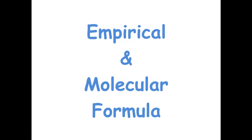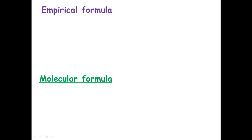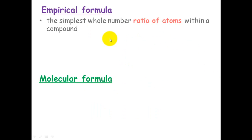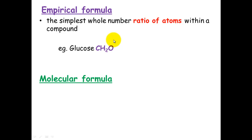Empirical and molecular formula — what they are and how to derive them. The empirical formula is the simplest whole number ratio of atoms within a compound. For example, glucose would be CH2O.